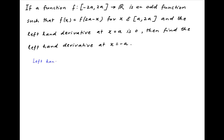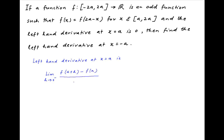The left-hand derivative at the point x is equal to a is given by the limit h tending to 0 from the negative side: f of a plus h minus f of a, divided by h. This is given to be equal to 0.